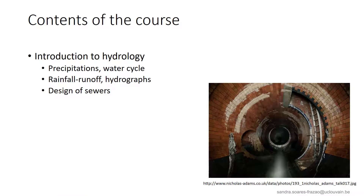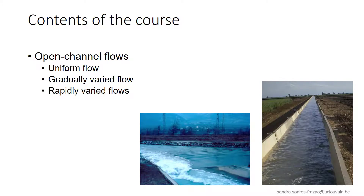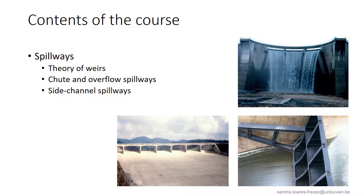So with all these examples, what will be the contents of this course? The first part is an introduction to hydrology: precipitation, the water cycle, rainfall-runoff relations, how they produce a hydrograph, and how from this hydrograph we can design urban sewers. The second part discusses open channel flows — first uniform flows, then gradually varied flows, and rapidly varied flows like hydraulic jumps. The third part discusses spillways, starting with the theory of weirs, then different types of spillways like chute overflow or side channel spillways.